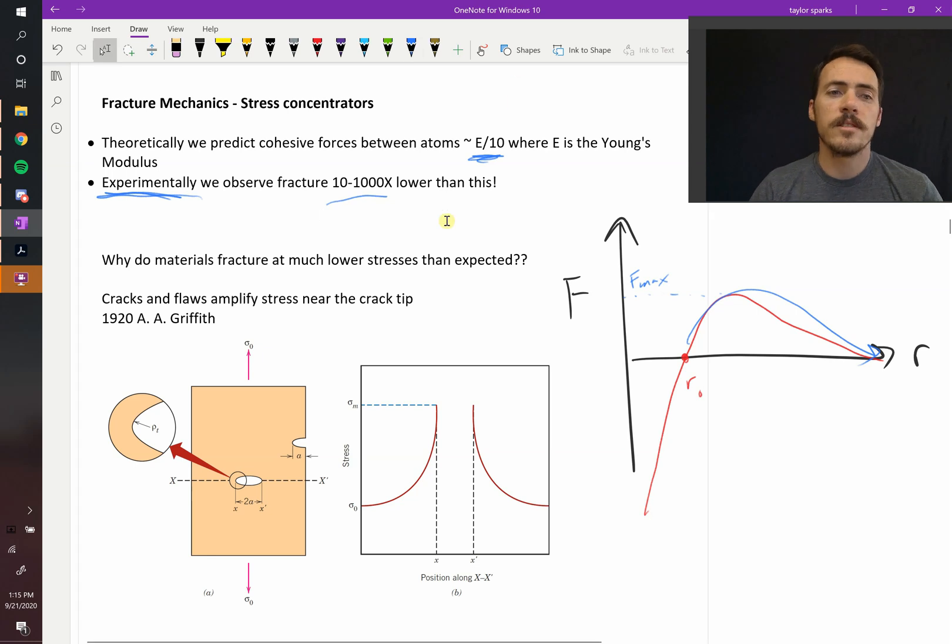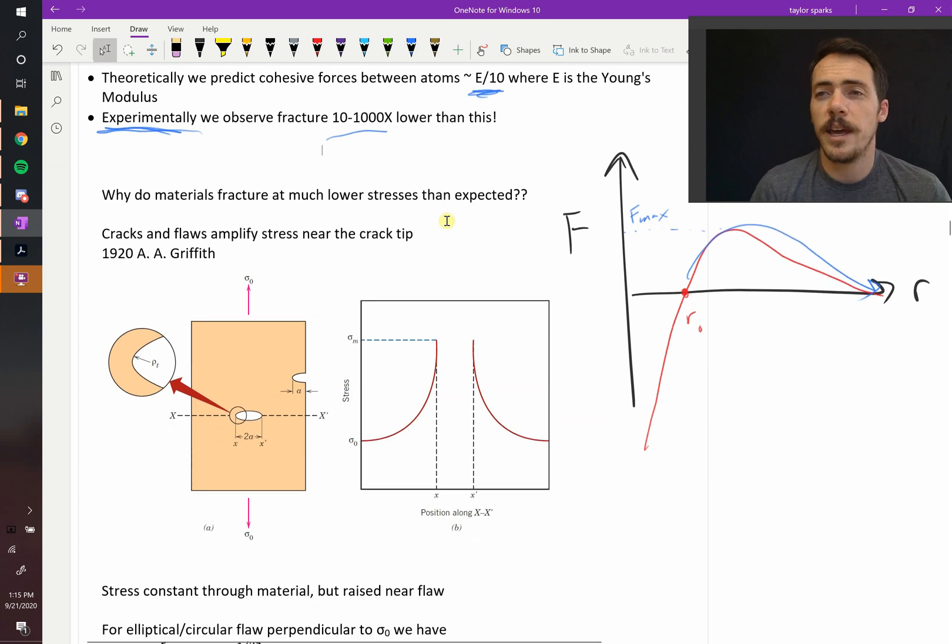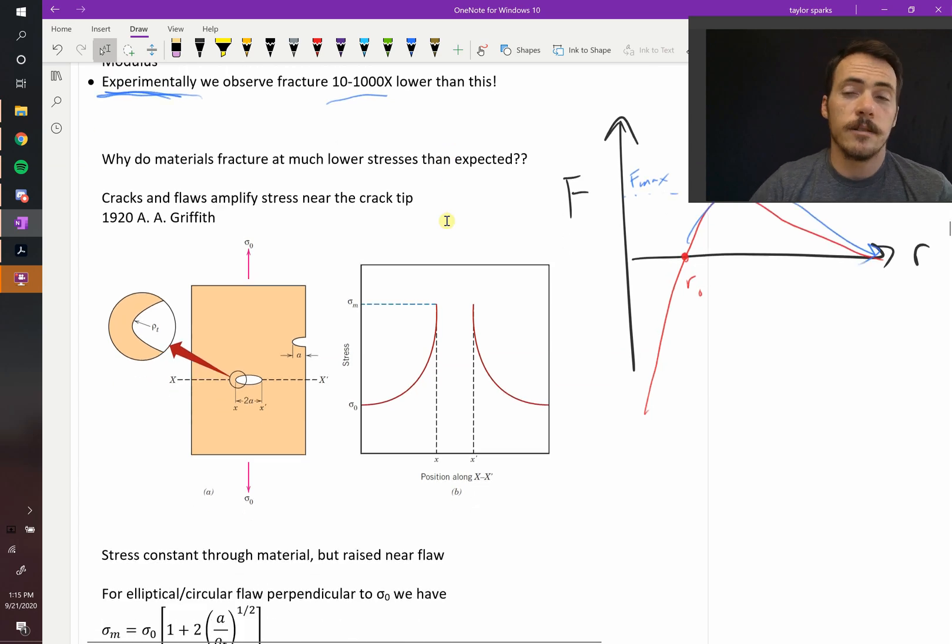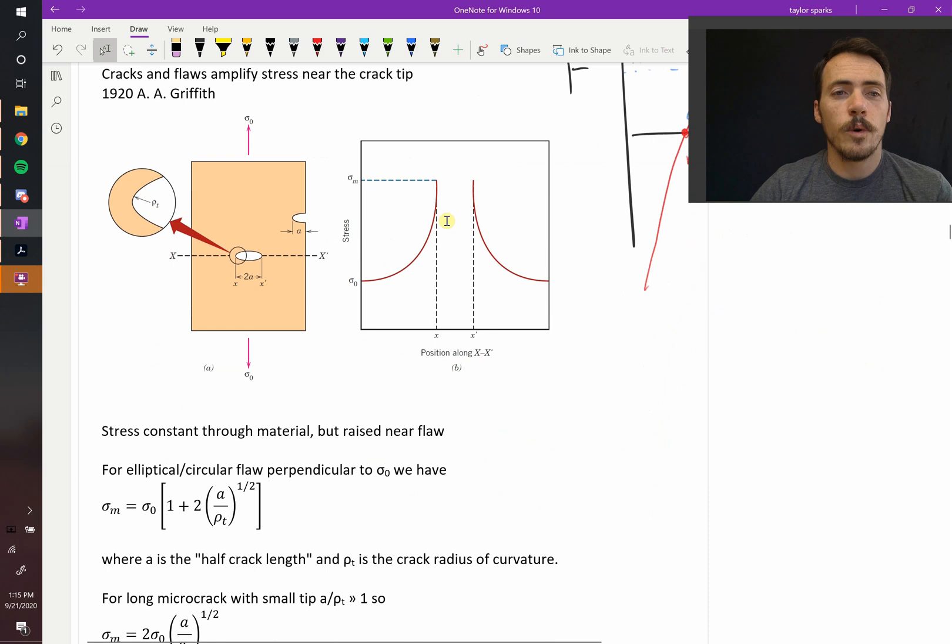So this is what led to this idea of stress concentrators. This was put forward in the 1920s by A.A. Griffith. Cool character. So here's what he proposed. He said, all right, you've got flaws in your material.